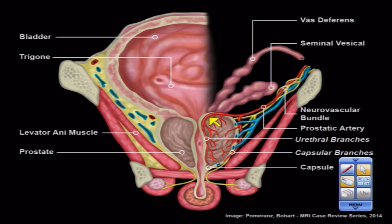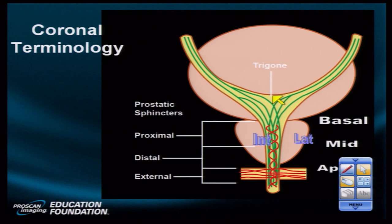Here we are back in the coronal projection showing the neurovascular bundles out to the sides, and the base, apex, and mid portion of the prostate with some vascularity including the urethral branches, which penetrate the prostate. Sometimes you'll actually see small dots in the prostate representing vessels, and sometimes small dots representing prostatic calcifications. These are two features that may completely confuse you when looking at the diffusion maps or ADC maps, as they may show up as darker areas and produce confusion in PI-RADS 2.0 diagnosis.